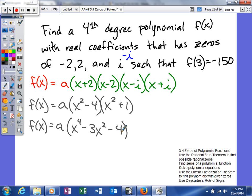But right now we're still looking for what is that a value. So what we're going to do is we're actually going to take our function value that was given to us in our problem, f(3) is equal to negative 150, and plug that in. So 3 is going to be our x value, and negative 150 will be the y. So we'll say negative 150 is equal to a, and then we could have plugged it in either place, but I'm just going to plug it in down here in our final answer. 3 to the fourth minus 3 times 3 squared, and then minus 4.